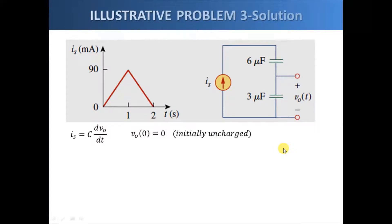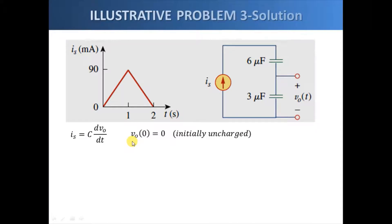Since the current through a capacitor is related by the time rate of change of its voltage, we have i_s equals C times dV_o over dt, where V_o is the voltage across the three microfarad capacitor. We further assume that the three microfarad capacitor has no initial charge.